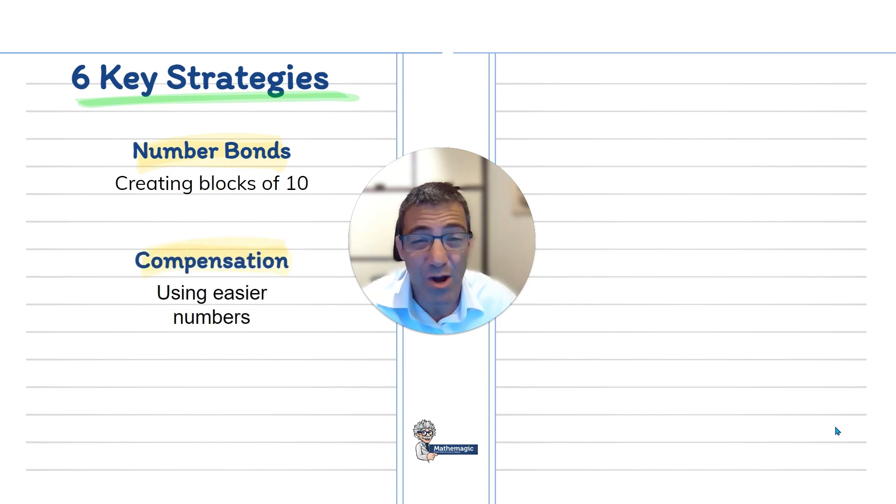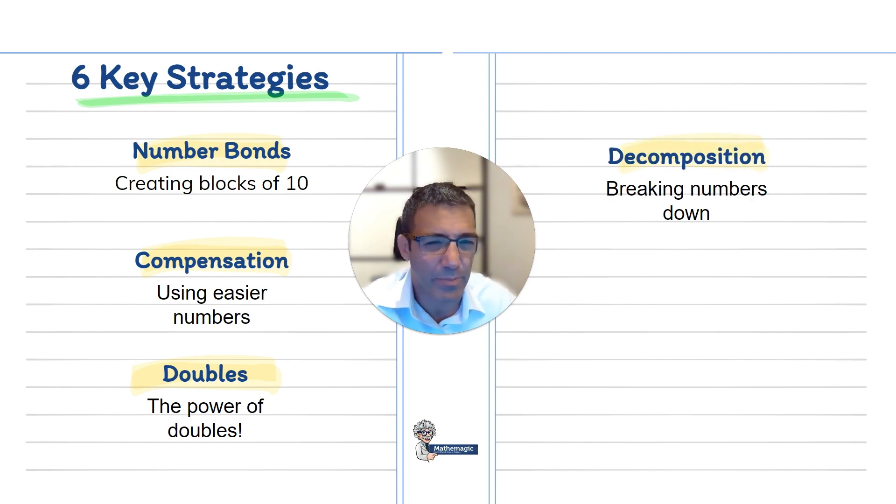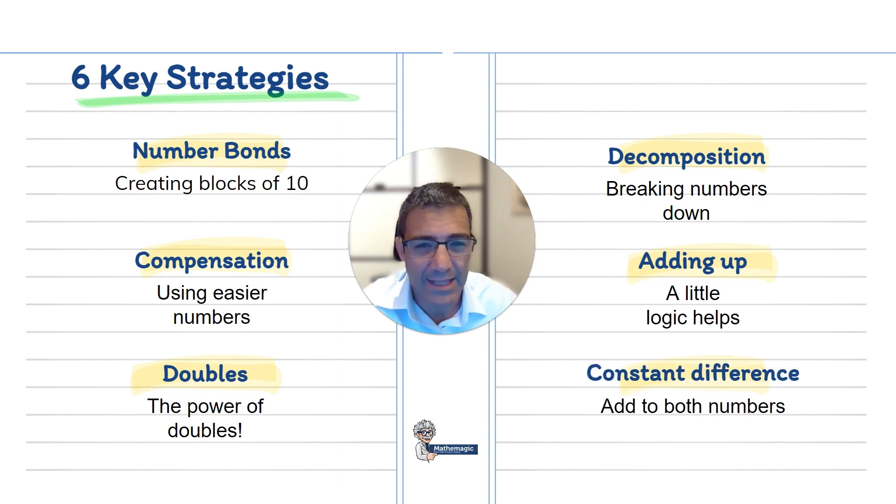The next point we'll explore is compensation, using numbers which are easier to work with so that you can get to your result. We're also going to look at doubles and why doubles are super important. We'll look at decomposition and how breaking numbers down can make calculations easier. We'll look at adding up and how we can go from a number and add certain quantities to get to the number we want. This works a lot for subtraction. And for our last strategy, we'll look at the constant difference, which is adding a similar quantity to both sides to make sure that you can get to the results you want.